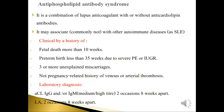Clinical history criteria for antiphospholipid syndrome include: fetal death at more than 10 weeks gestation, preterm birth before 35 weeks due to severe preeclampsia or IUGR, three or more unexplained miscarriages, and a non-pregnancy-related history of venous or arterial thrombosis.